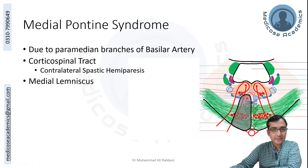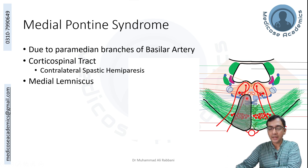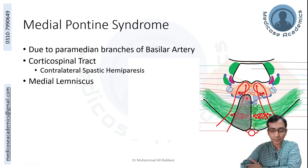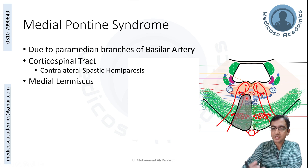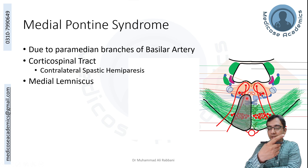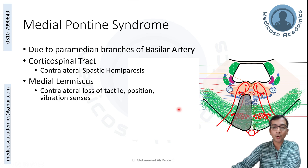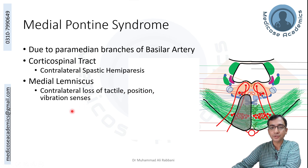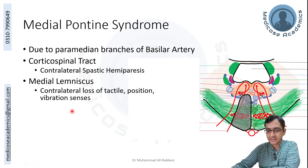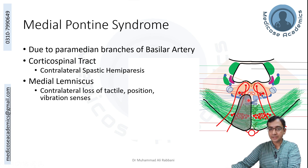The next prominent feature is due to the medial lemniscus. The medial lemniscus carries two-point discrimination, proprioception, and vibration sensations from the opposite side of the body — the signals started from one side, traveled up in fasciculus gracilis and cuneatus, synapsed in nucleus gracilis and cuneatus, crossed the midline just above the pyramidal decussation, and ascended as the medial lemniscus. Involvement leads to contralateral loss of tactile, two-point discrimination, position, vibration, and proprioception senses.